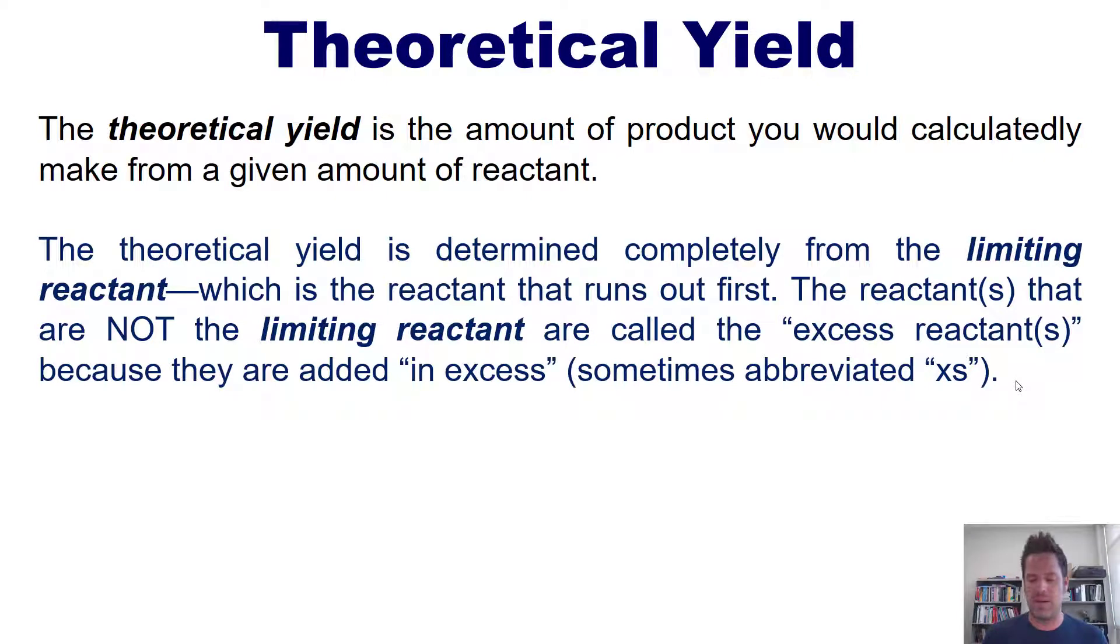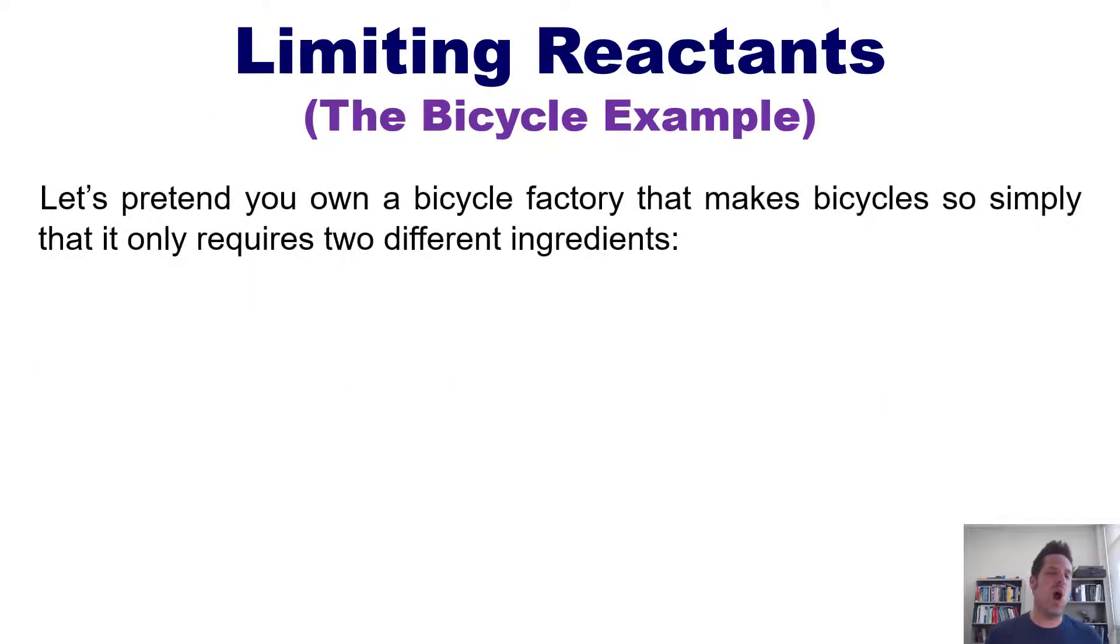Now in order to understand the limiting reactant a little bit better, I'm going to use the bicycle example. Let's pretend that you own a bicycle factory that makes bicycles so simply that it requires only two different ingredients or reactants: the frame and the wheels. You have to add one frame together with two wheels in order to yield or produce one bicycle. Make sense? Very simple. Now let's ask some questions.